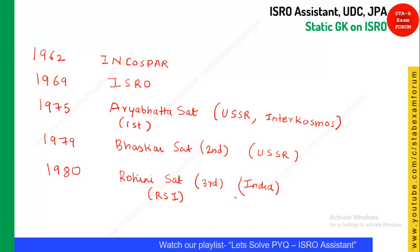Rohini was launched by India itself, making India the seventh country to launch its own satellite into space. Important distinction: the first satellite launched by India indigenously is Rohini, not Aryabhatta. Aryabhatta is the first satellite ever launched, but Rohini is the first launched by India on its own.